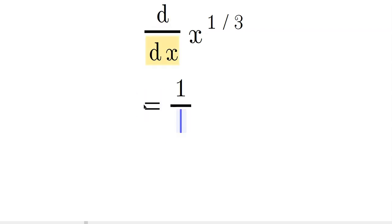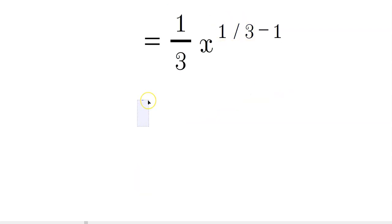When you differentiate, you're going to bring the 1/3 down, and it's going to be x raised to the 1/3 minus 1. You need to operate on a fraction, so it's going to be 1/3 x raised to the 1/3 minus 1, which is going to give us 1/3 minus 3/3, because that's equivalent to 1.